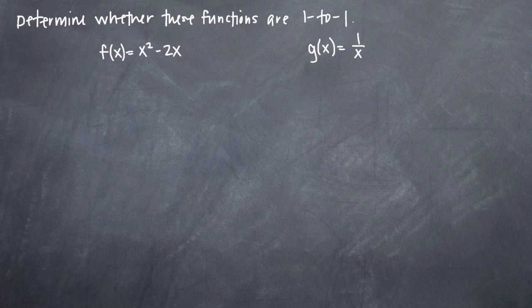To solve a problem like this, we have to show that every x input value gives a different y output value. And if we have two different x inputs that give the same y output, then we know that the function is not one to one.